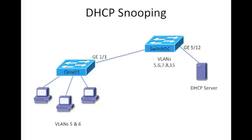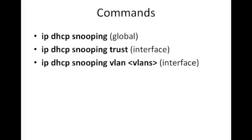Switch DC has VLANs 5, 6, 7, 8, and VLAN 15. There are really three different things we want to go ahead and do, and it's easy to install this. At the global level we turn on IP DHCP Snooping, and then at the interface level we tell it which interface to trust — in other words, which ones would we expect to see the DHCP server responses coming back from. Then the last thing we do is tell it which VLANs those apply to.